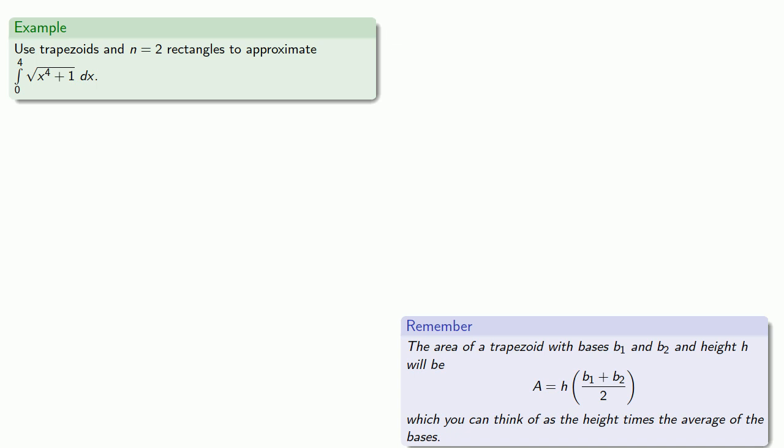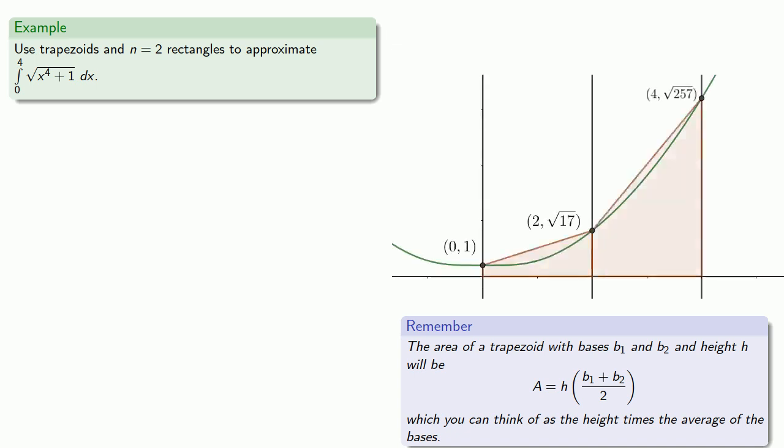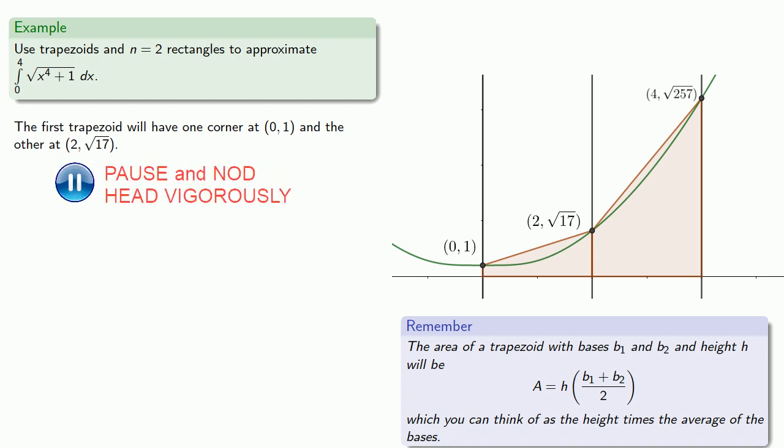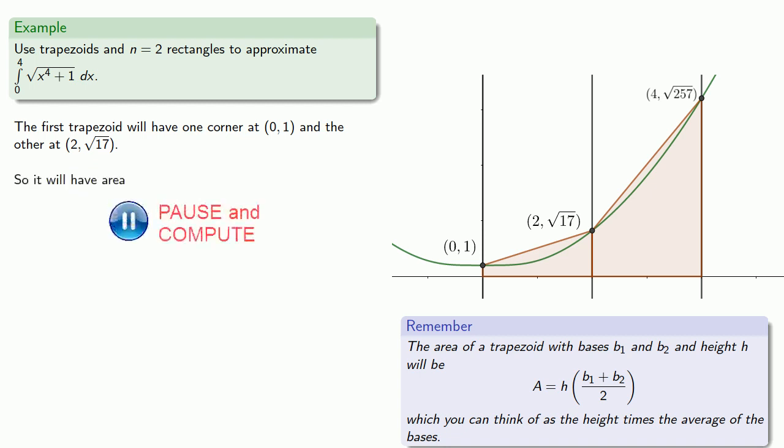So again let's use n equals 2 rectangles to approximate the same integral. And so our trapezoid will actually join the corners of our region. So the first trapezoid will have one corner at 0, 1, and the other at 2, sqrt(17). So its area will be...